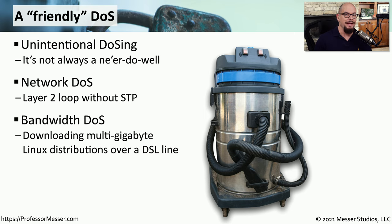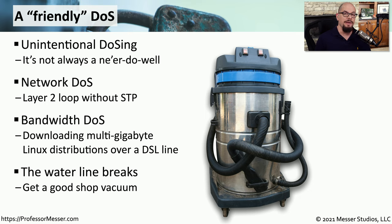If you have limited access to the internet, one person downloading a very large file could create an outage for everybody. You want to be sure that you have a way to manage the bandwidth over your internet connections so that you're not causing a denial of service for everybody else. We also have to think about our physical facility — something like a water line break can certainly create a problem, especially if that water line happens to be in the ceiling above your data center.